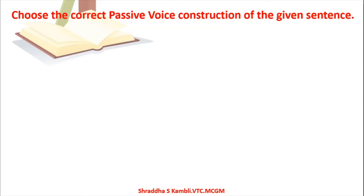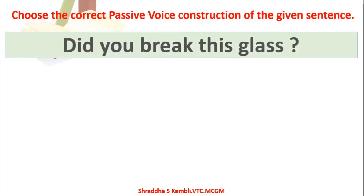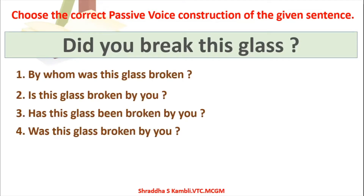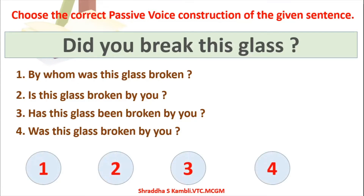Next question for practice: 'Did you break this glass?' The options are: (1) By whom was this glass broken? (2) Is this glass broken by you? (3) Has this glass been broken by you? (4) Was this glass broken by you? The correct answer is answer number 4: 'Was this glass broken by you?'